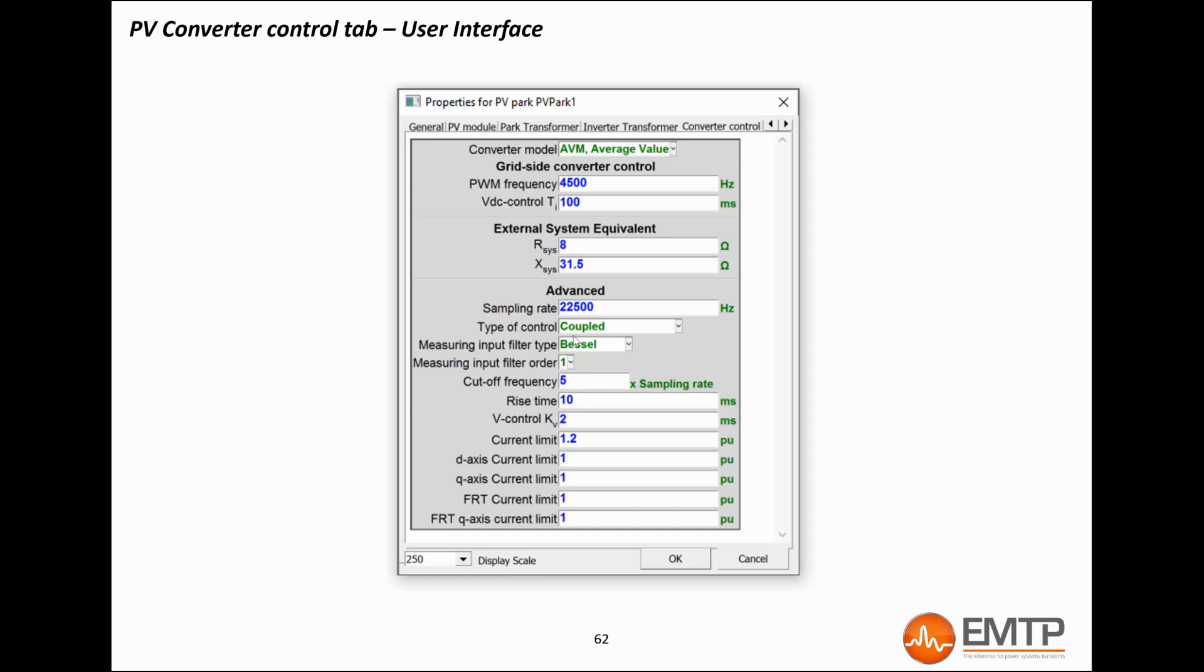The external system equivalent is important to set up as, like I explained a few slides ago, the grid-side converter inner loop gains are calculated using this information. Let's now quickly demonstrate the model in EMTP.